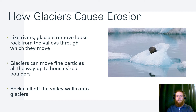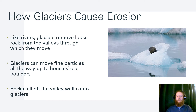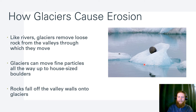Let's talk about how glaciers cause erosion. Like rivers, glaciers remove loose rock and sediment from the valley through which they move. They can move really small particles all the way up to house-sized particles. As glaciers travel through valleys, rocks fall onto them and get carried along — sometimes thousands of miles from where they started.